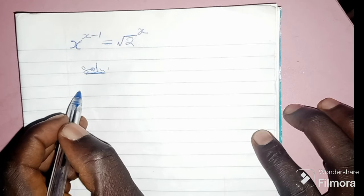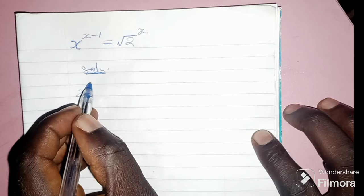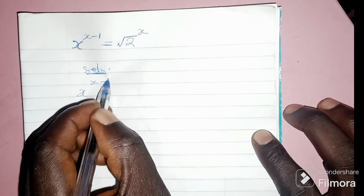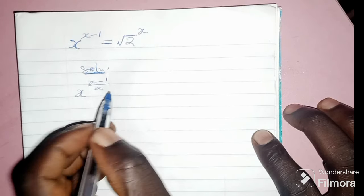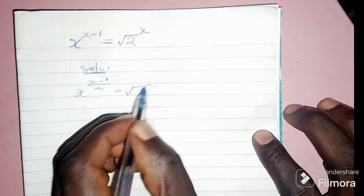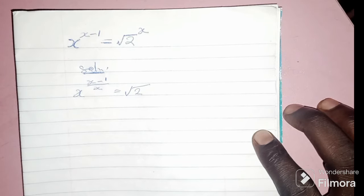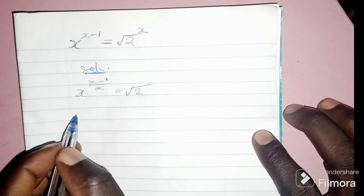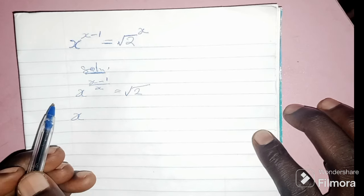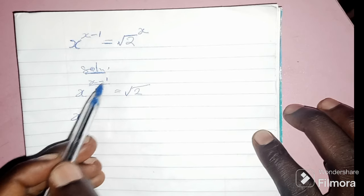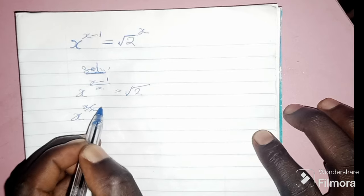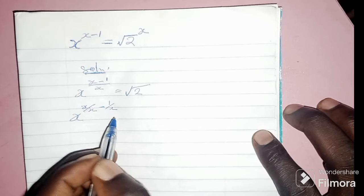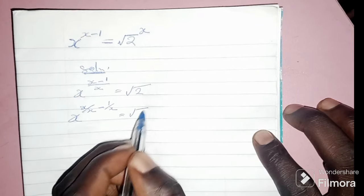So I'm going to have x to the power of (x minus 1) divided by x, is equal to square root of 2. Then, this (x minus 1) divided by x can be written as x divided by x, minus 1 divided by x, which is equal to square root of 2.